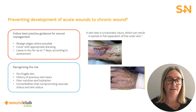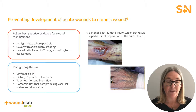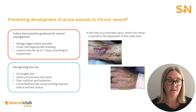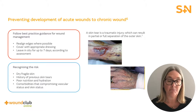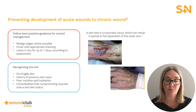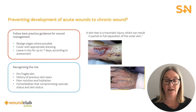Risk factors for skin tears include skin-related factors such as extremes of age, dry or fragile skin, and previous skin tears. Mobility-related factors include history of falls, impaired mobility, and dependence on assistance for activities of daily living, as well as mechanical trauma. General health risk factors include comorbidities, polypharmacy, impaired cognition, sensory impairment — visual and auditory — and also malnutrition.